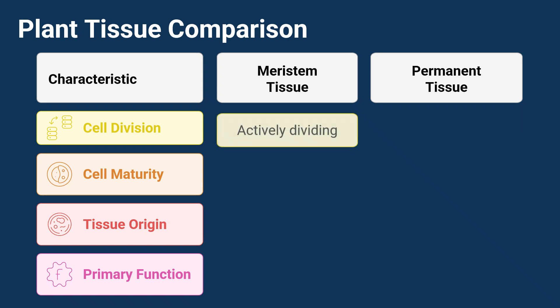Cell division. Cells in meristematic tissue are actively dividing. This is key for a plant to grow both up — that's primary growth — and out — that's secondary growth.